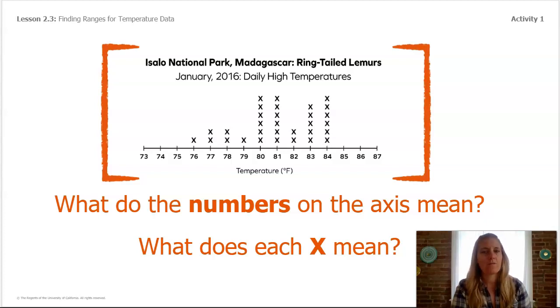One other important feature of the graph to notice is that the line plot begins at 73 degrees Fahrenheit. The axis on line plots do not often start at zero.